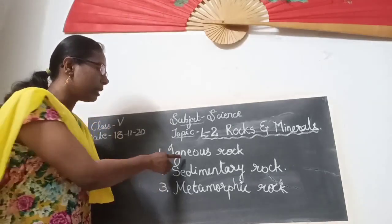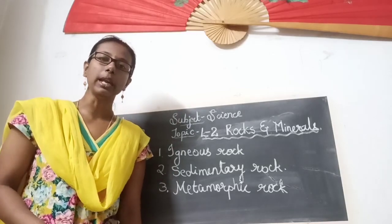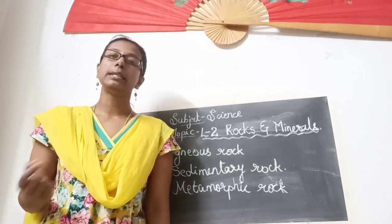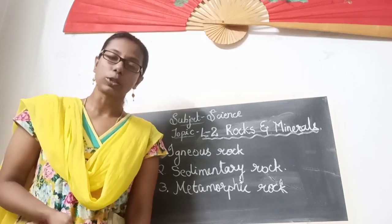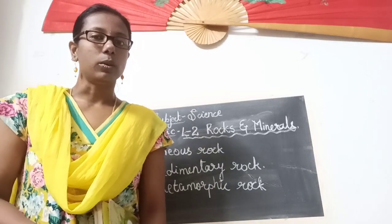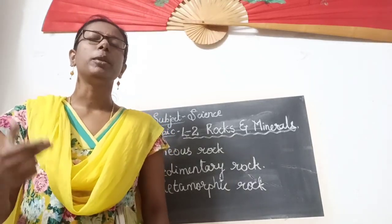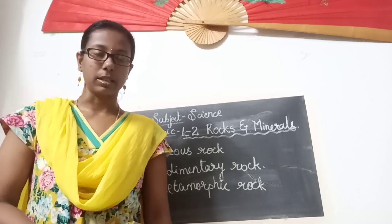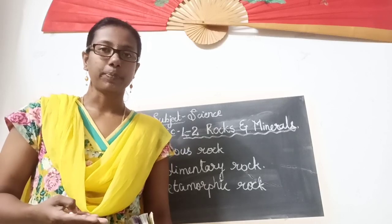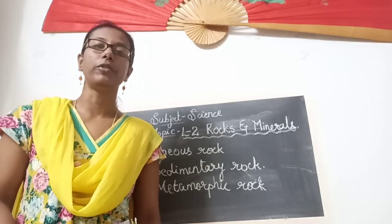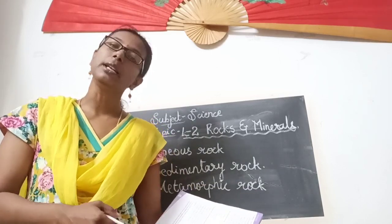Let us begin with igneous rock. Most of our mountains are formed from igneous rock. You must have seen in videos or on National Geographic and educational channels about a volcano. Now, inside the earth there is the earth's crust — the center point of the earth — where there is a lot of heat and molten rocks present. During volcanic eruptions, the molten rocks present in the earth's crust travel to the surface of the earth in the form of lava.